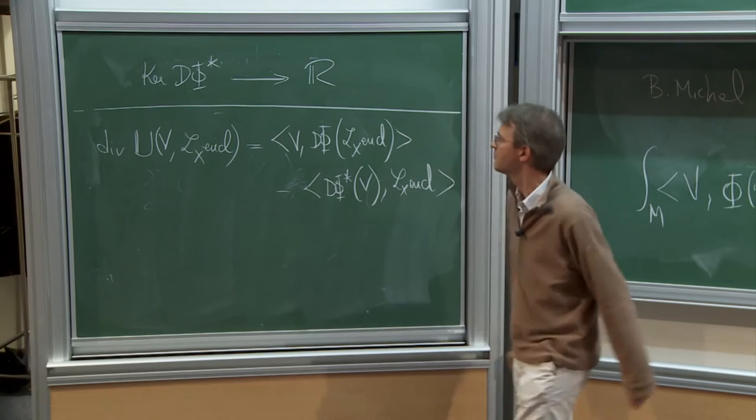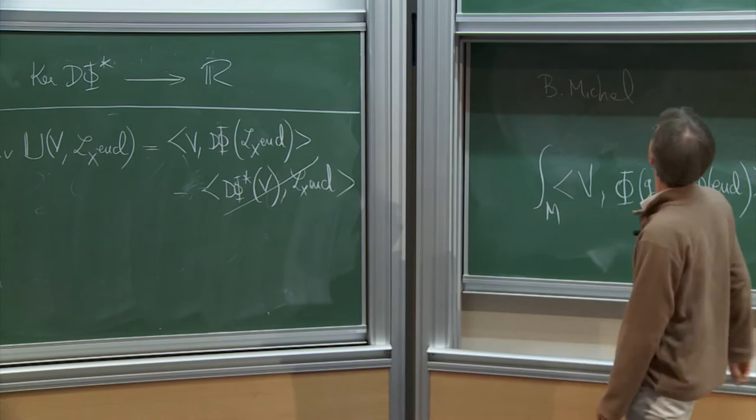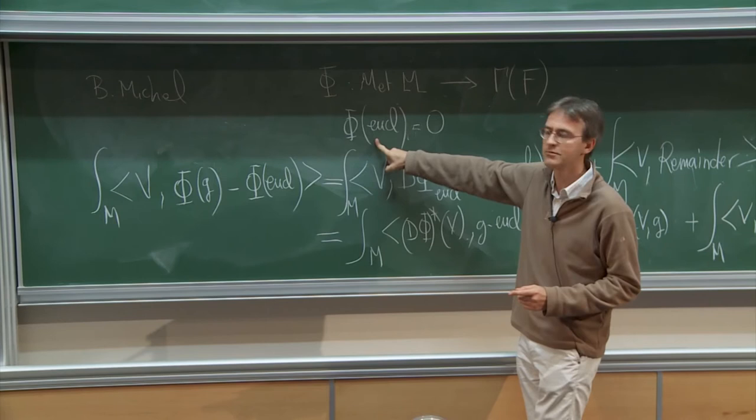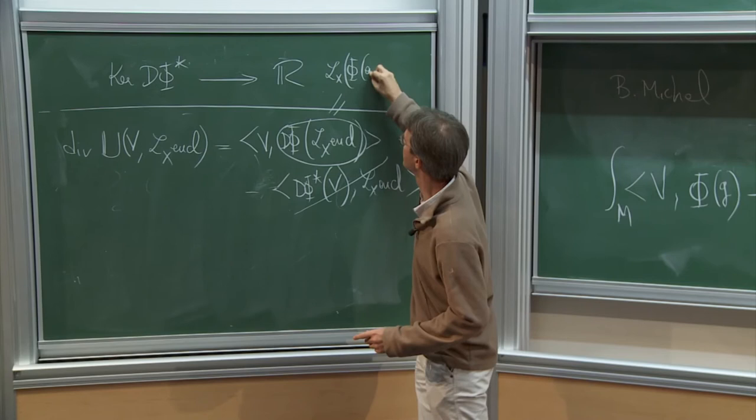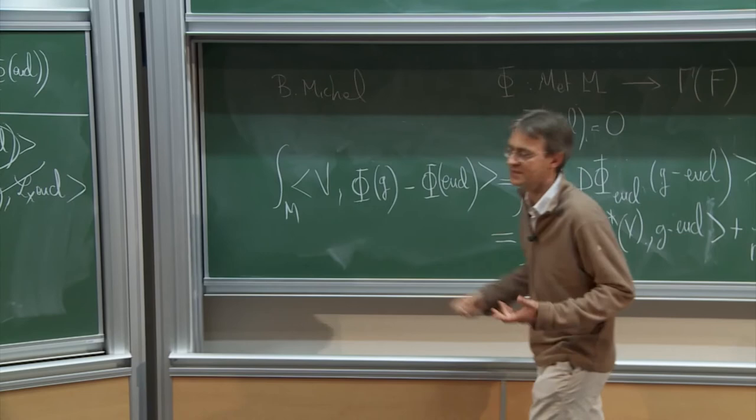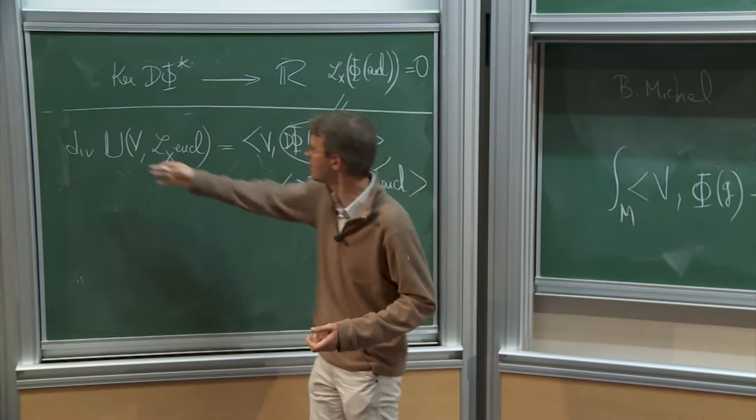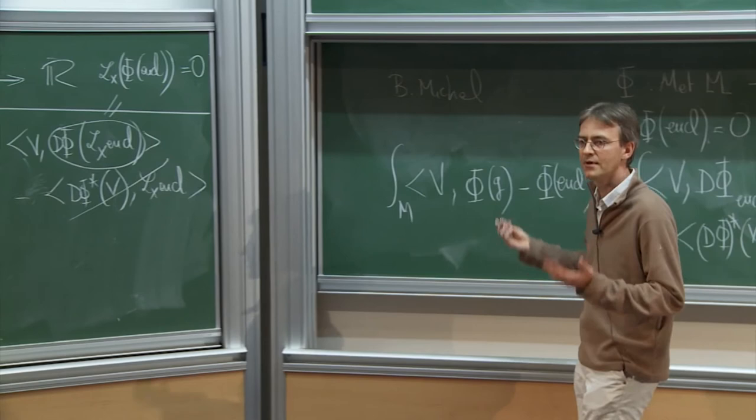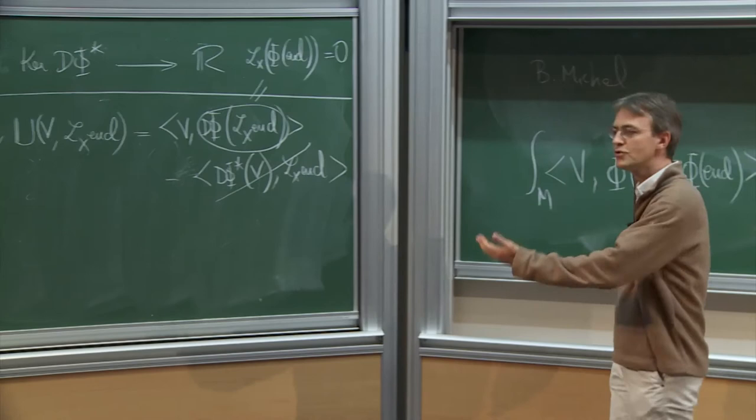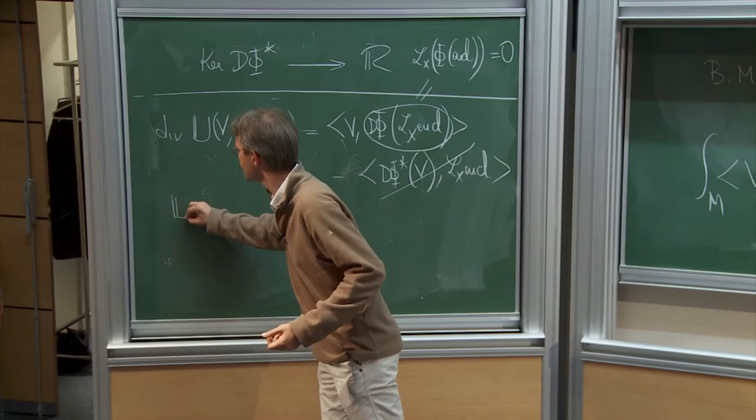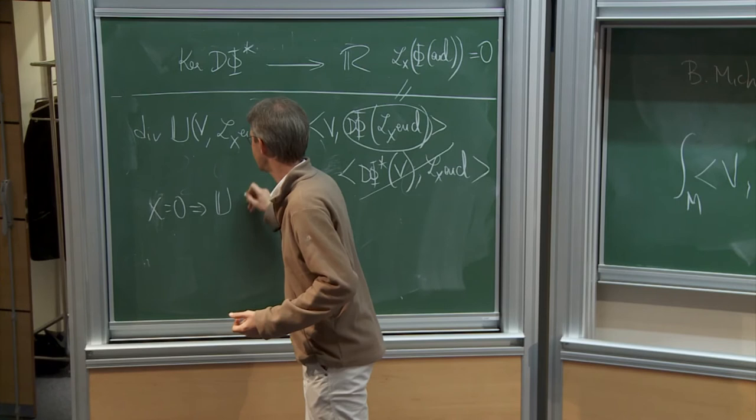But still, v is an element of the kernel, so this one is zero. And remember that I've said somewhere, here, that phi of the Euclidean metric is zero. So this here, since phi is a natural differential operator, this is the variation of phi of Euclidean metric, so it's 0, too. Okay, so you have here this u, it's a map, it's a natural map from sections of vector bundle, it's x, into closed forms. And moreover, it's very easy to see that if x equals 0, then u of this thing, well, trivial.